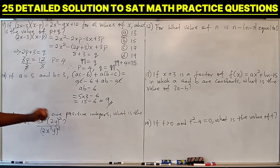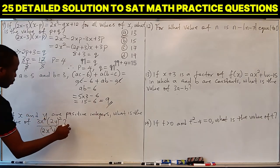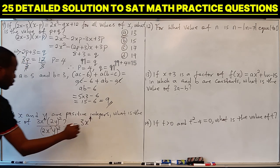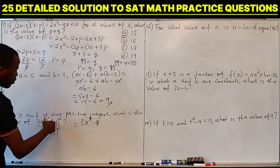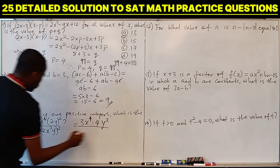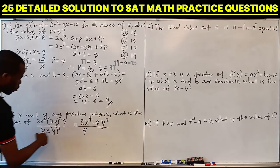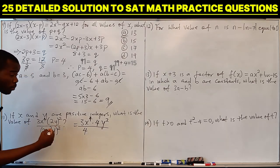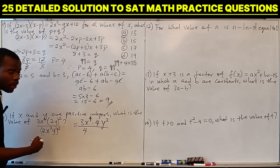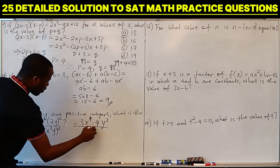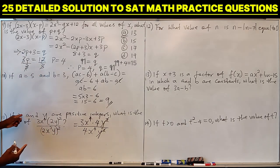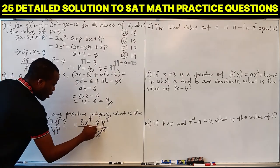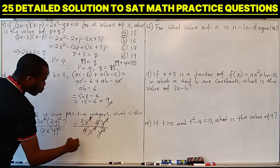Question 11: if X and Y are positive integers, what is the value of the given expression? Opening the bracket in the numerator gives 3X⁴ times 4 times Y², and in the denominator we have 4X⁴Y². By the laws of indices, the powers multiply: 2 times 2 is 4, giving X to the power 4. The Y² cancels, X⁴ cancels X⁴, and 4 cancels 4, leaving 3 as the answer.